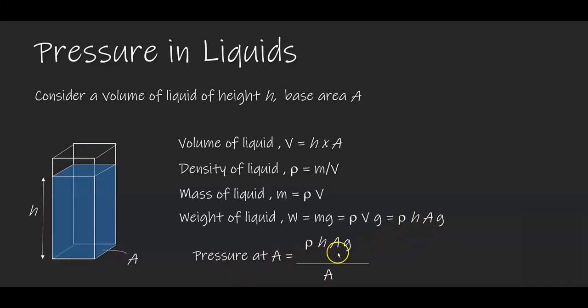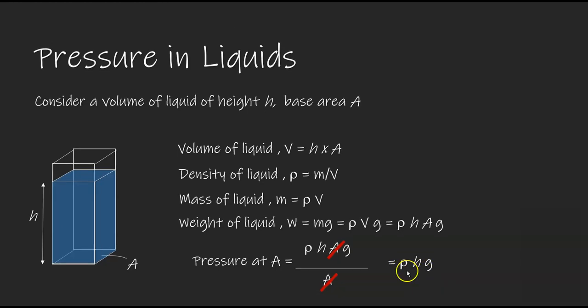With the area on the numerator and denominator, they cancel each other, so we get the pressure of the liquid to be equal to density ρ times h times g. This means that the pressure of liquid equals the height of the column times the density of the liquid times the gravitational field strength.